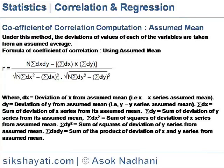The formula for the coefficient of correlation using assumed mean is: r = [n·Σdx·dy − Σdx·Σdy] / [√(n·Σdx² − (Σdx)²) × √(n·Σdy² − (Σdy)²)].